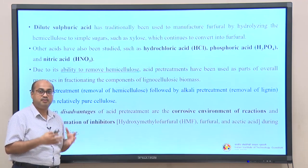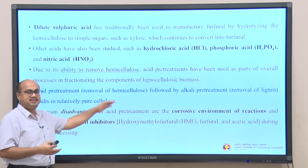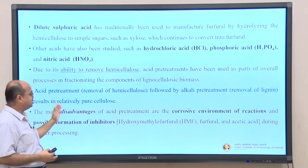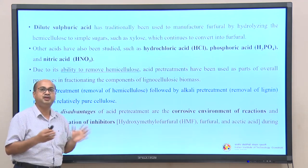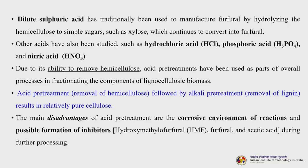Alkali predominantly does the role of removing lignin. So if you combine dilute acid followed by alkali, it becomes a hybrid process - both hemicellulose and lignin will be removed and whatever is left out is cellulose. The main disadvantages of acid pretreatment are the corrosive environment of reactions and possible formation of inhibitors like HMF (hydroxymethylfurfural) and acetic acid during further processing.